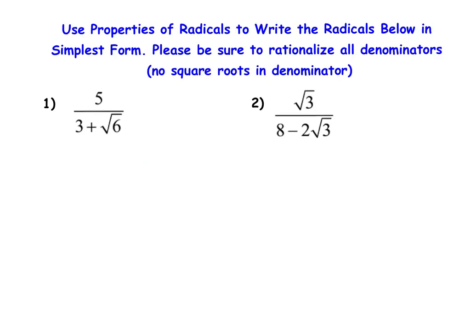In Example 1, we have a square root in the denominator with a sum, so we need to use the conjugate to remove that square root. We can't simply multiply by just the square root of 6 to get the square root of 36, because that plus 3 is also there. Your conjugate is the same expression but with a different sign in between — so this plus symbol changes to a minus symbol, giving us a conjugate of 3 minus the square root of 6.